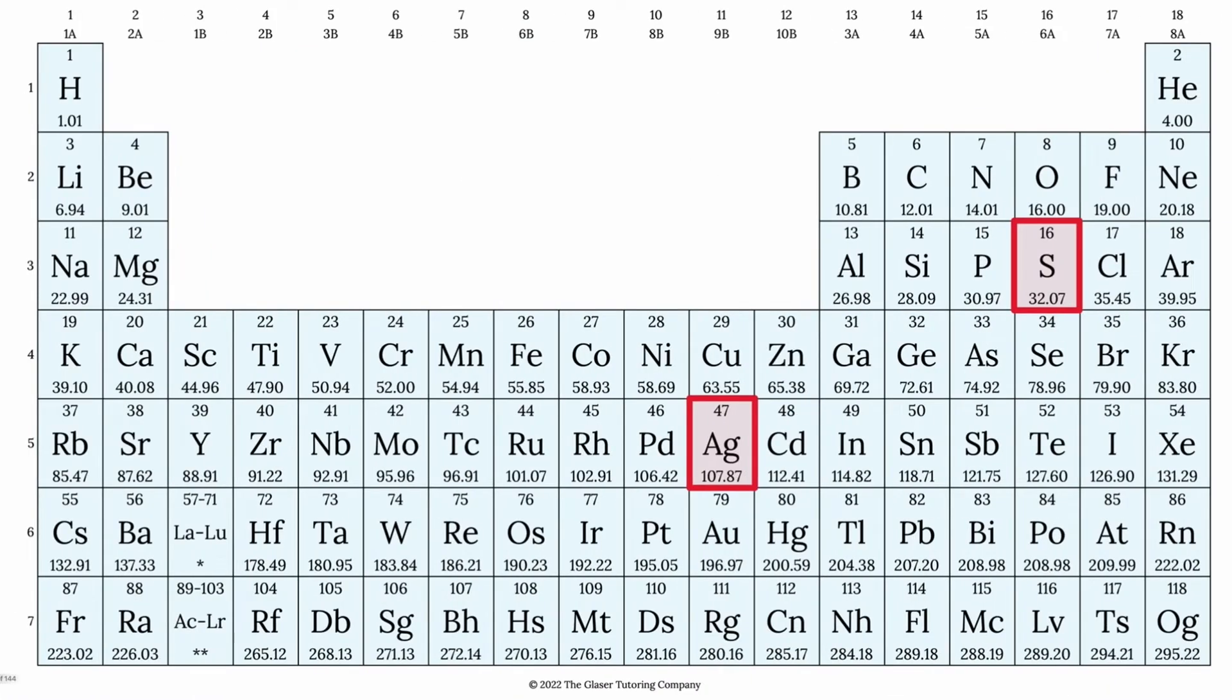Here's the periodic table, and it looks like silver is about 107.87. Now if you're doing this in molar mass, those units are going to be in grams per mole. If this is molecular mass, then it will be in AMU, also known as atomic mass unit.